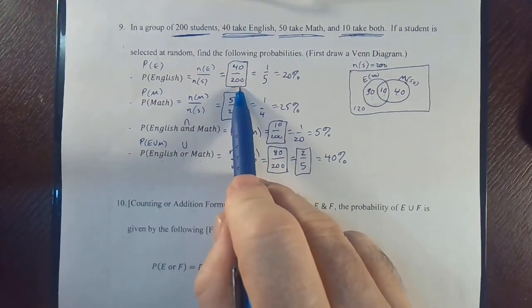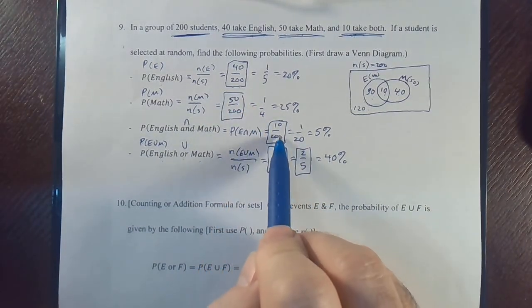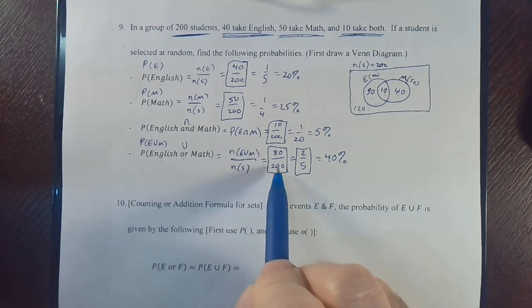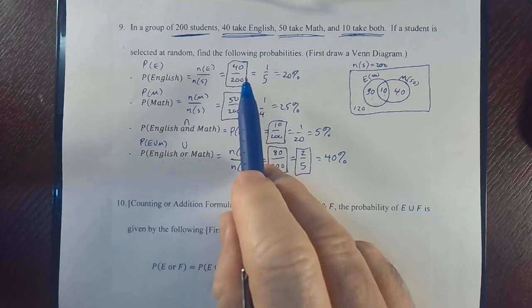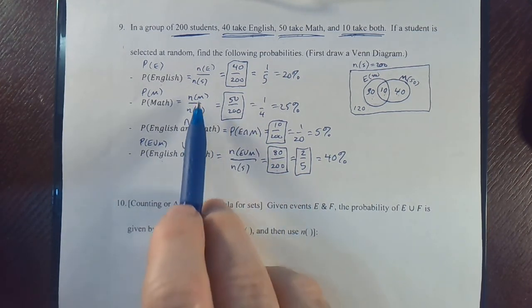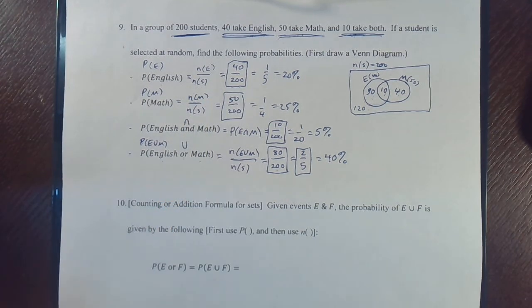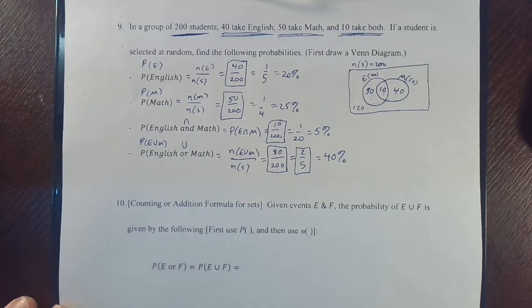For the upcoming exam, you don't need to reduce the fractions. I'd actually like to see all denominators as 200, because it shows you understand the sample space size and that you know how to reduce fractions.